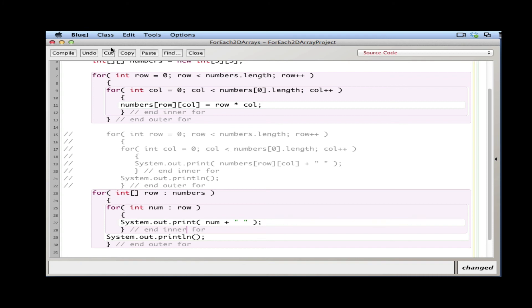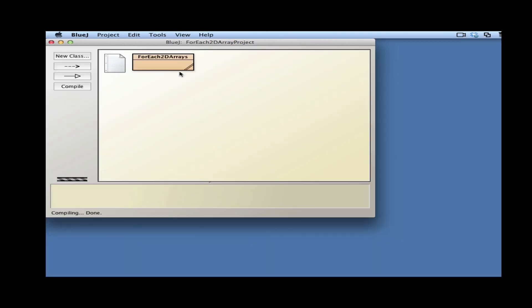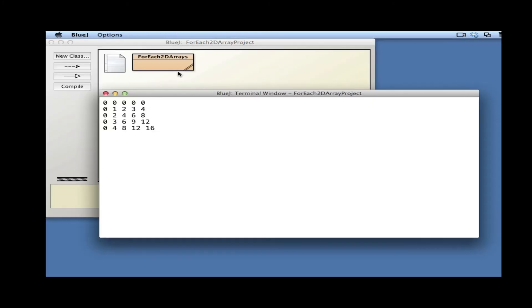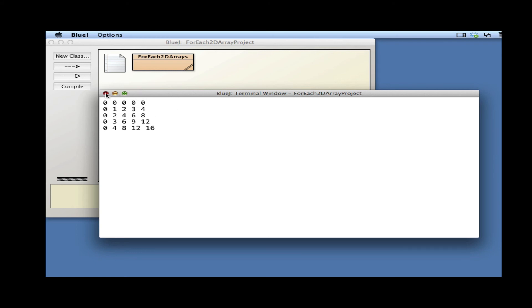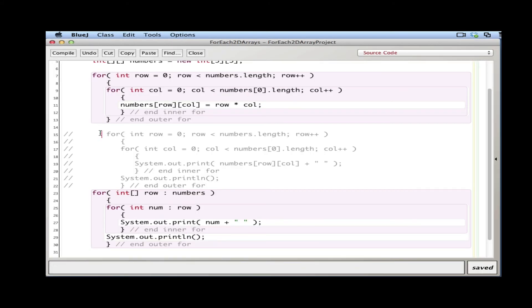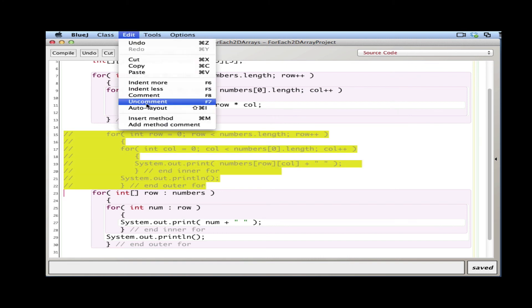So let's run this program, compile it and run it, and you can see I have the same 2D structure. Now if you look at the two for loops side by side, here's our regular for loop and here's our for-each loop.